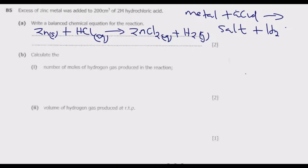This equation needs to be balanced. In terms of zinc, we have one zinc on each side — balanced. Hydrogen: we have two hydrogen on the right but one on the left, so we place a 2 on the left. For chlorine, we have two on the left and two on the right. The equation is balanced by introducing just one number.